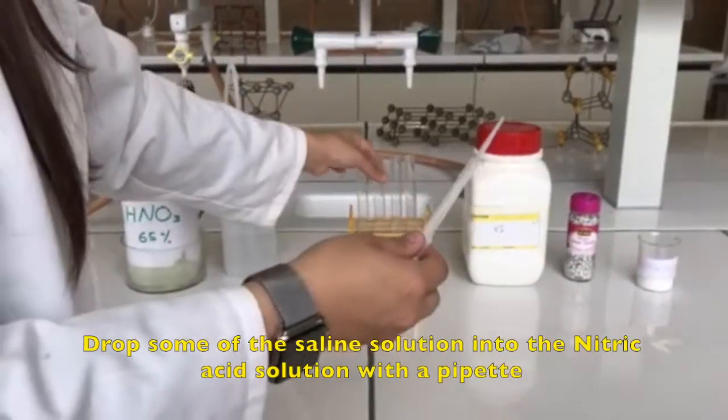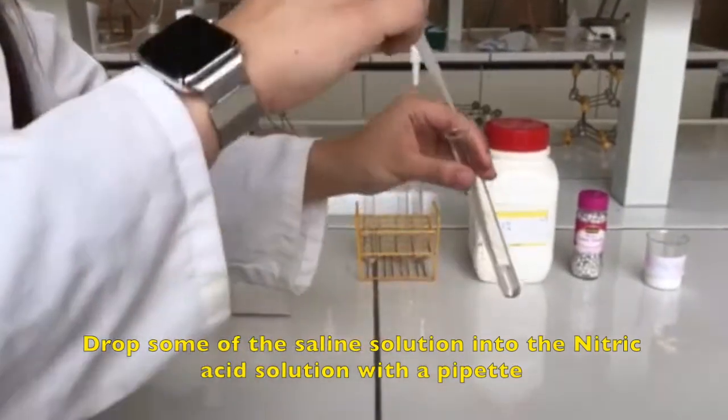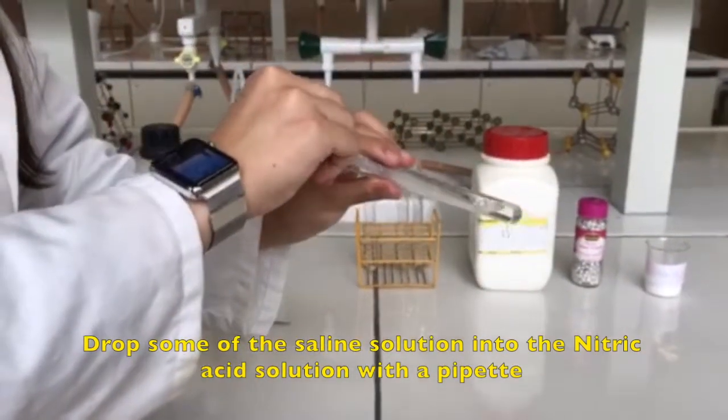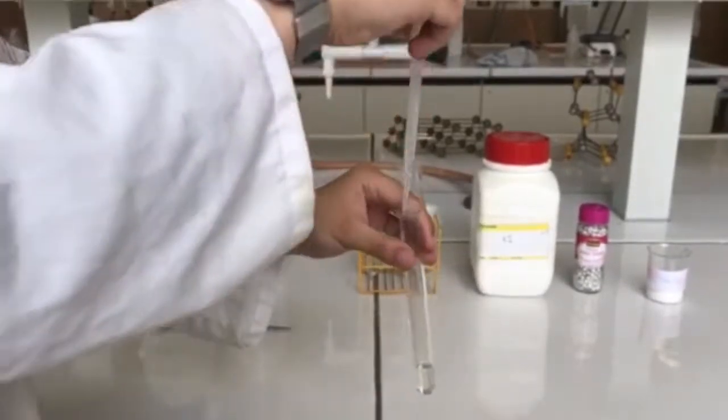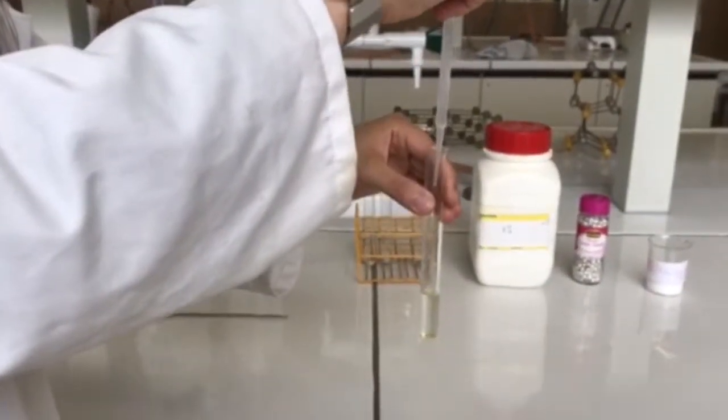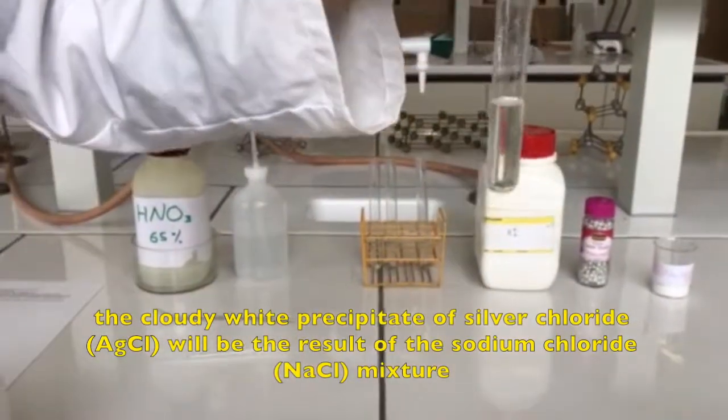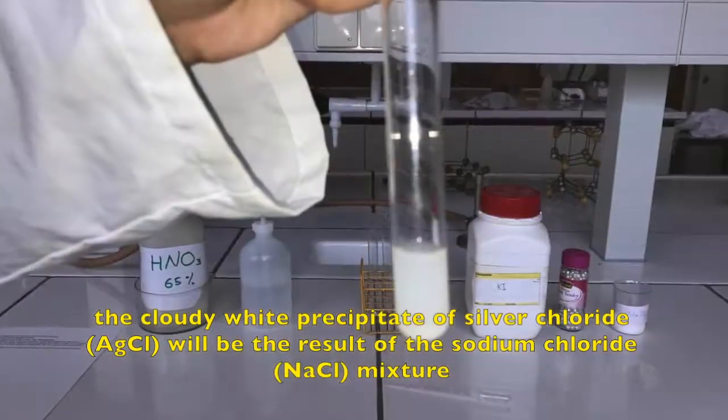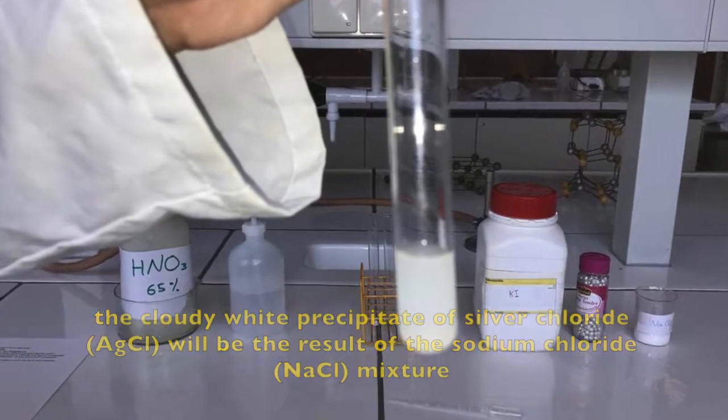Drop some of the saline solution into the nitric acid solution with a pipette. The cloudy white precipitate of silver chloride will be the result of the sodium chloride mixture.